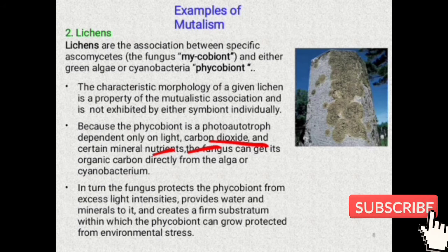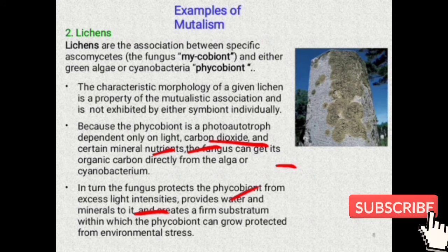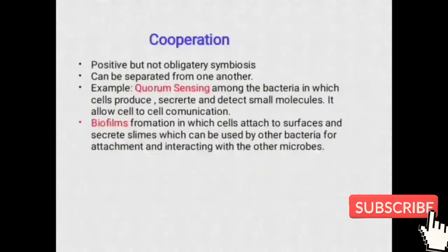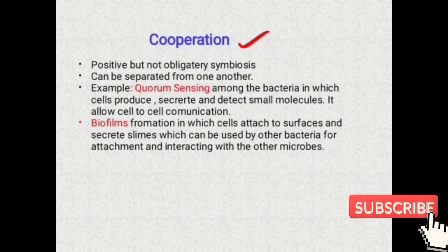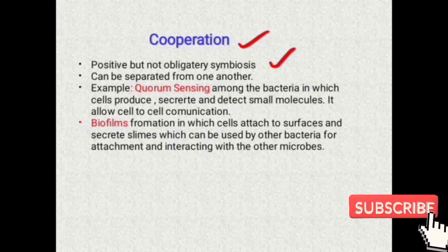In lichens, the phycobiont is phototrophic and depends on light, carbon dioxide, and certain nutrients which the fungus can provide for further growth. In turn, the fungus protects the phycobiont from excess light intensities, provides water and minerals to it, provides substrates for growth, and prevents environmental stress.